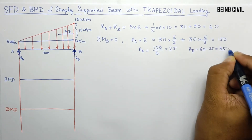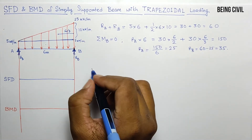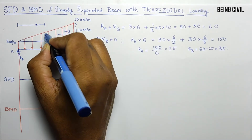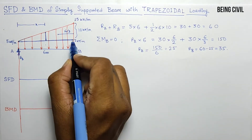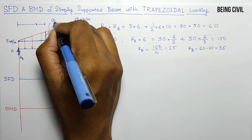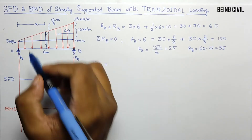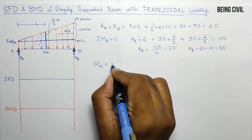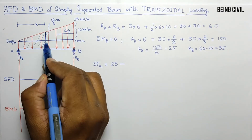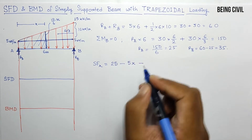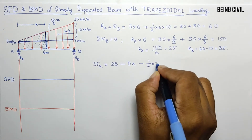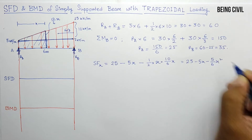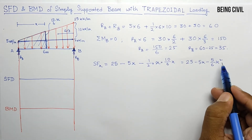So Rb = 35 kN. Now let us find the shear force equation. Taking a section at a distance x from the left-hand side, by similar triangles the UVL intensity at x is (10/6)x. The shear force Sfx = 25 − 5x − ½ × x × (10/6)x, which simplifies to a parabolic equation in x².